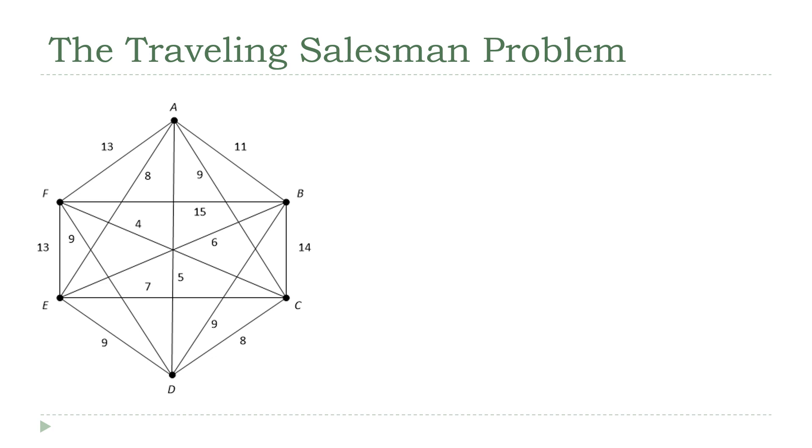In the last lecture, we talked about the nearest neighbor method for solving this. And remember, there are no known exact algorithms for answering this question that can execute in a reasonable amount of time, even for really large graphs. So what we're doing here is talking about methods that give us a reasonably good approximate answer. In this lecture, we're going to talk about another approach to this solution called the best edge method.